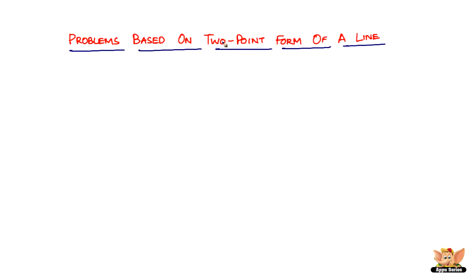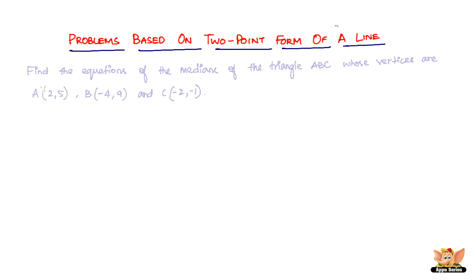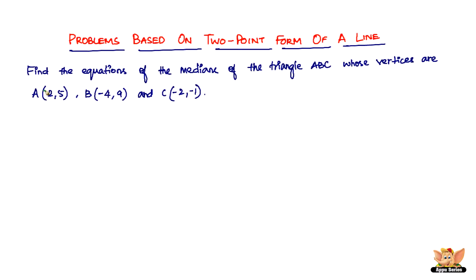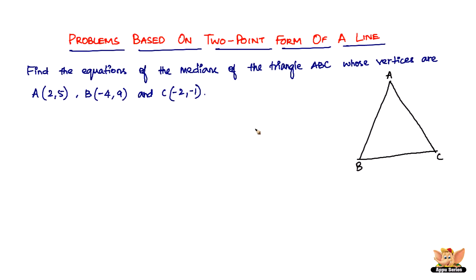In this video, let us solve problems based on the two-point form of a line. We've got this question here which reads: find the equations of the medians of the triangle ABC whose vertices are A, B, and C. Let's first draw the triangle and name them A, B, and C. We've got the coordinates: A is, B is, and C is.